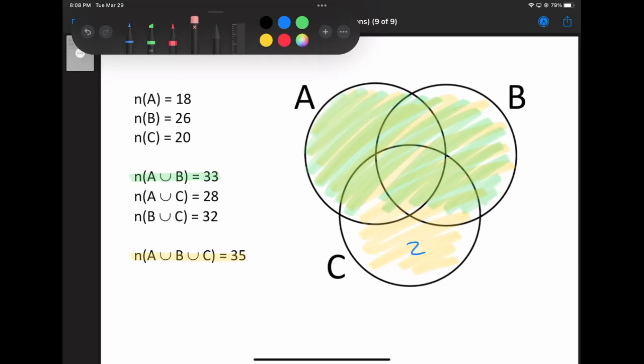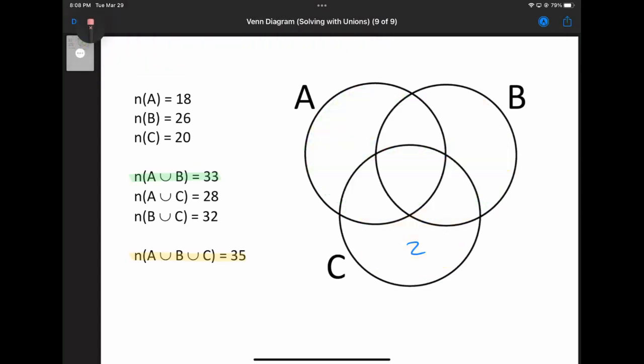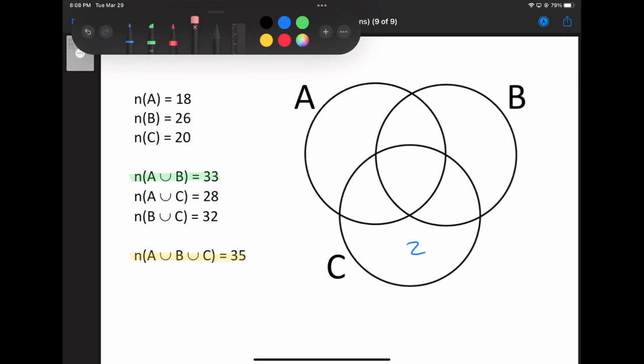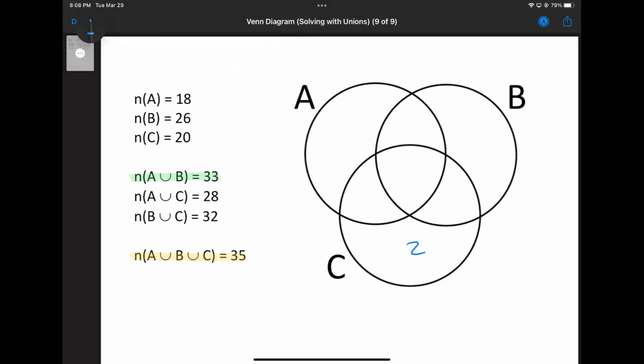So let me just get rid of that excess color there. And now if we go back to the same idea, if we have 35 in the entire thing, but the number of things in A and C, or A union C is 28, then that means that the things that are left over, basically out in this area here, that's everything outside of A union C, that would be the rest of them.